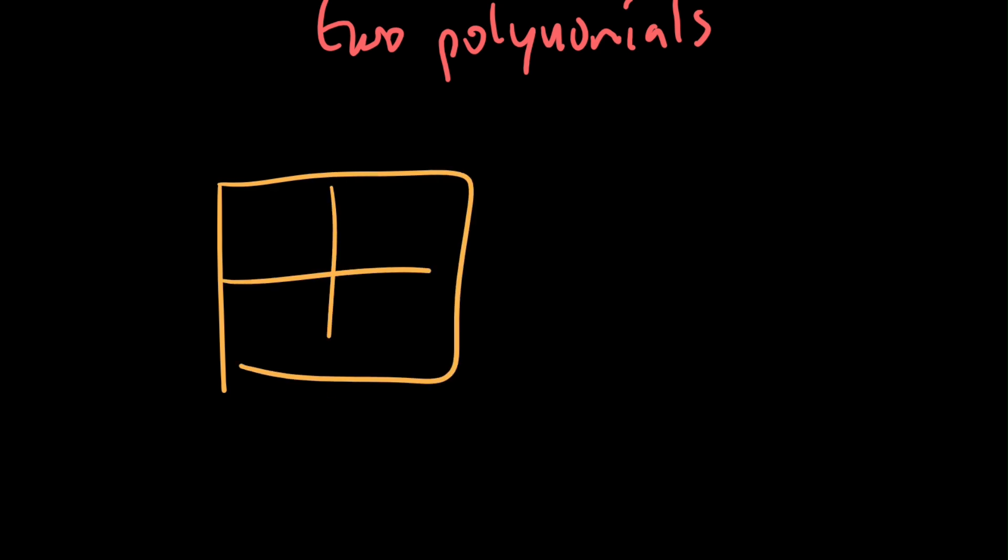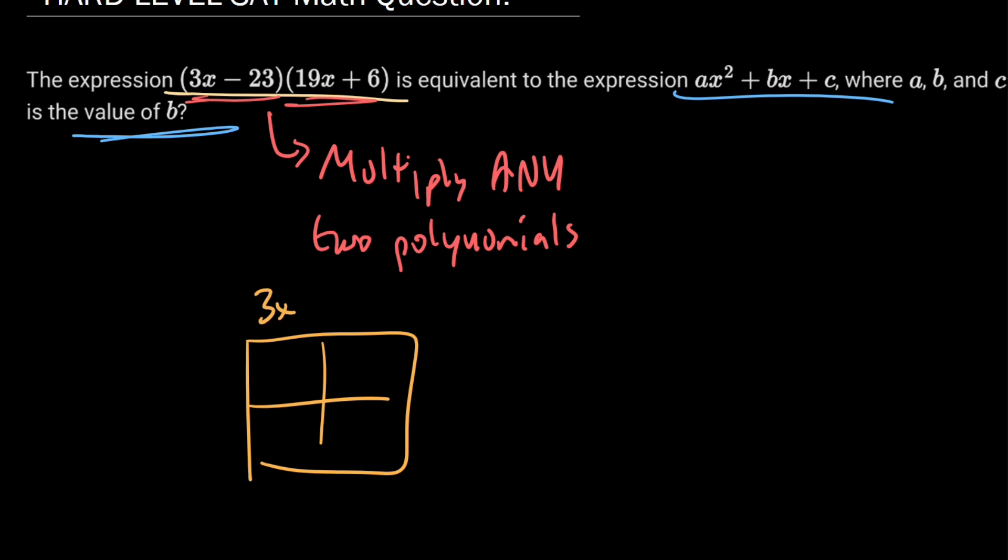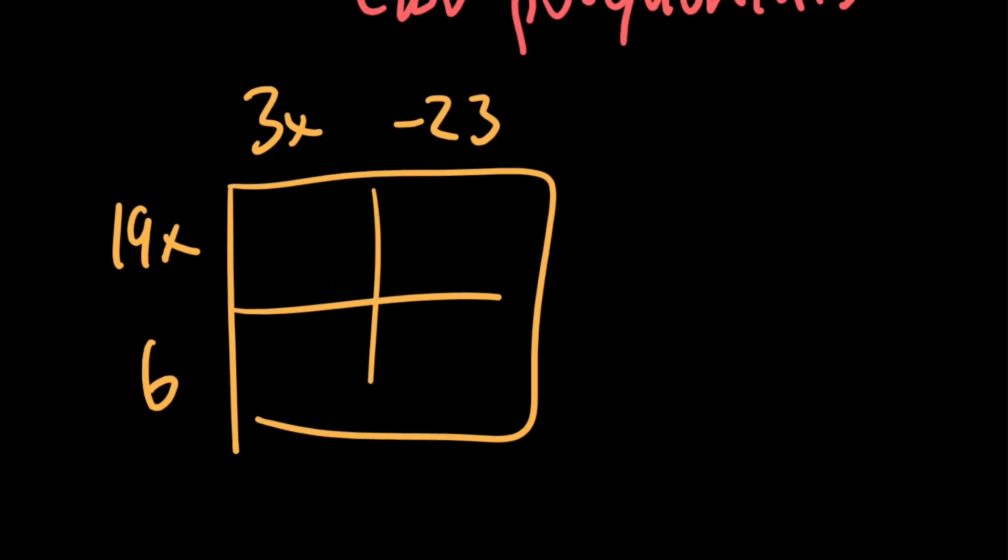Basically draw a box, and then put your first factor on the top, so 3x and then -23, and our second factor on the side, so 19x and 6. Then we just multiply in the way that makes the most sense. It's pretty easy to understand here.